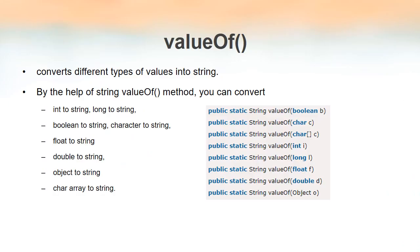The valueOf method is used for converting different types of values into string. By using this method we can convert integer values into string, double or floating point values into string, boolean values to string, float, object, or any other data type to string. So that is the basic usage of this method — whenever you need to convert a different type of data into string, we can make use of the method named valueOf.